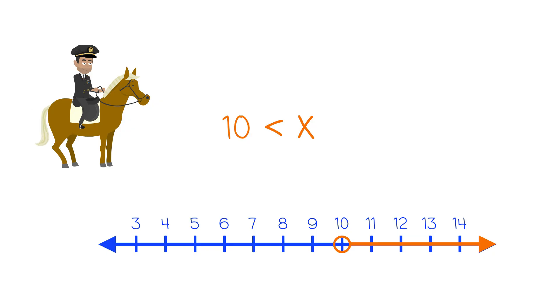And if you happen to see an inequality written with the number before the variable like this, it's okay. 10 is less than x is the same thing as x is greater than 10. It doesn't change how you graph it but can be a little confusing.